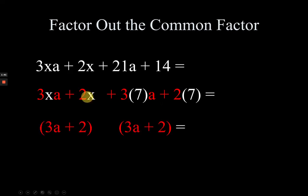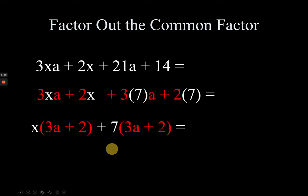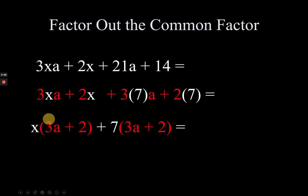The common in the first pair of terms is x — it goes in front. The second pair has a common of 7 — it goes in front. This is actually common factoring, which is like a reverse of the distributive property. If we multiply back: x times 3a is 3xa, x times 2 is 2x, 7 times 3a is 21a, and 7 times 2 is 14.